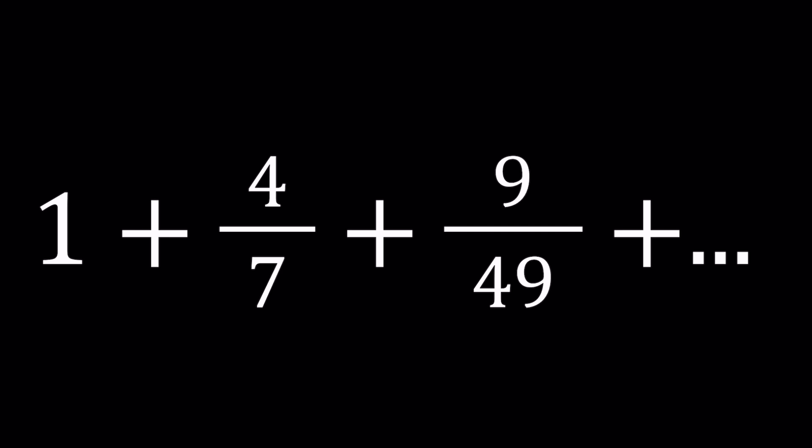So we have 1 plus 4 over 7 and then 9 over 49. While looking at the first few terms, you hopefully recognized something. This is 1 which can be written as 1 squared. 4 is 2 squared. 9 is 3 squared. So those are perfect squares. What about 7? 7 is just a number. What about 49? It's 7 squared.